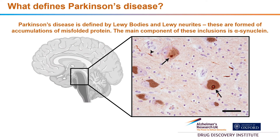So what defines Parkinson's disease? A lot of you will be familiar with Parkinson's disease and its clinical characteristics: a resting tremor, rigidity, postural instability, and bradykinesia, which means slowness of movement, and it is also accompanied with dementia. Parkinson's disease and other neurodegenerative diseases are such devastating and difficult-to-treat diseases because neurons are what scientists call post-mitotic cells, which means once they have developed into a neuron, they can no longer create new neurons.